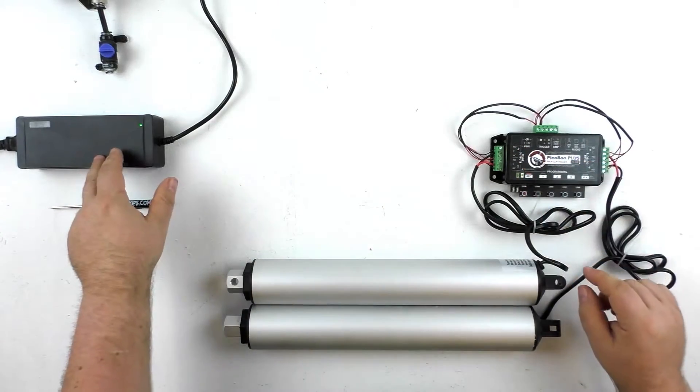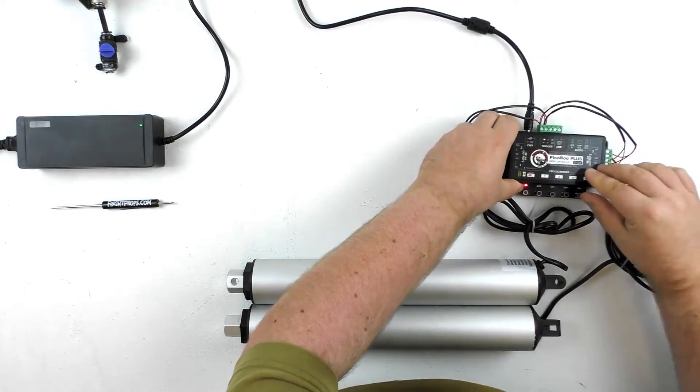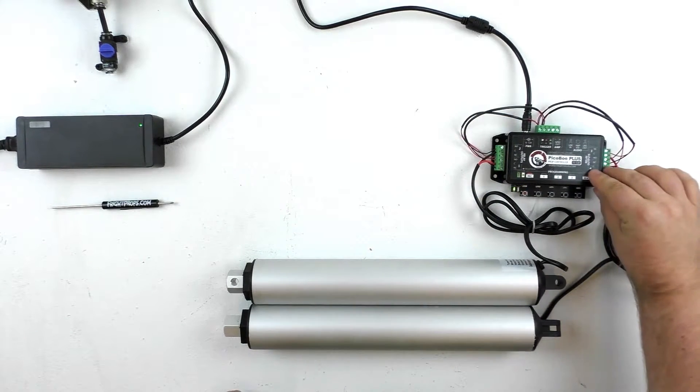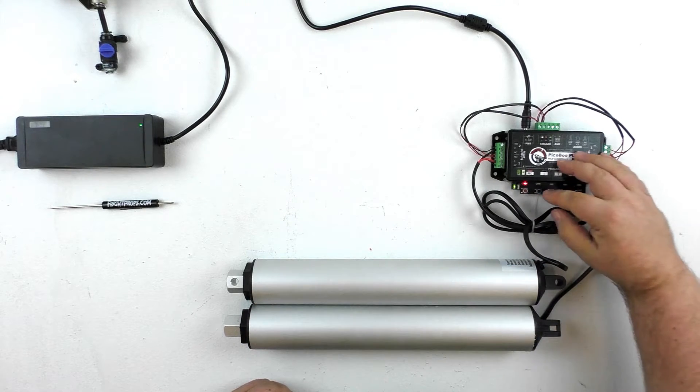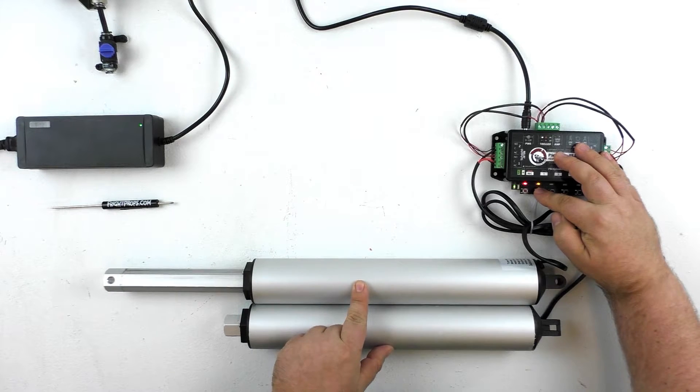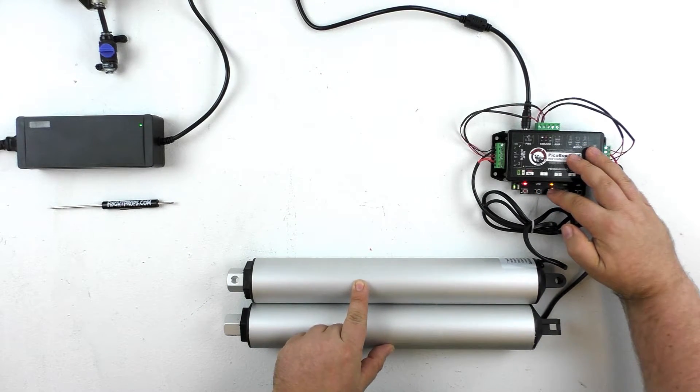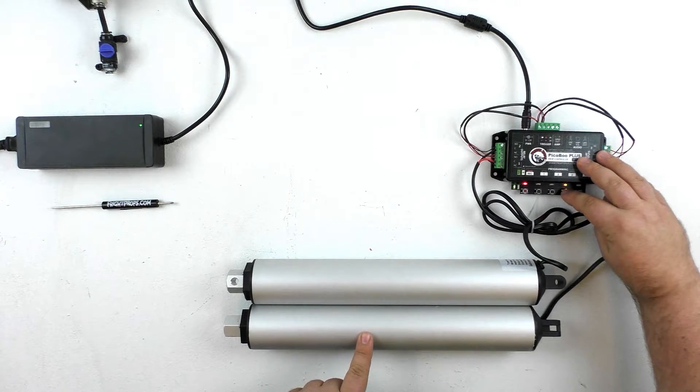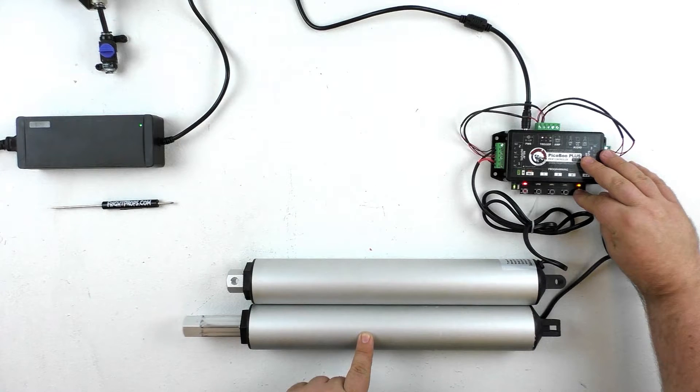Alright, so let's go ahead and plug in our power supply to the controller. Allow the controller to start up. Now we can program the Peekaboo Plus to control the linear actuators. So if we hit record, we can see that pressing number one will extend our first actuator, pressing number two will retract it, pressing number three will extend our second actuator, and pressing number four will retract that actuator.